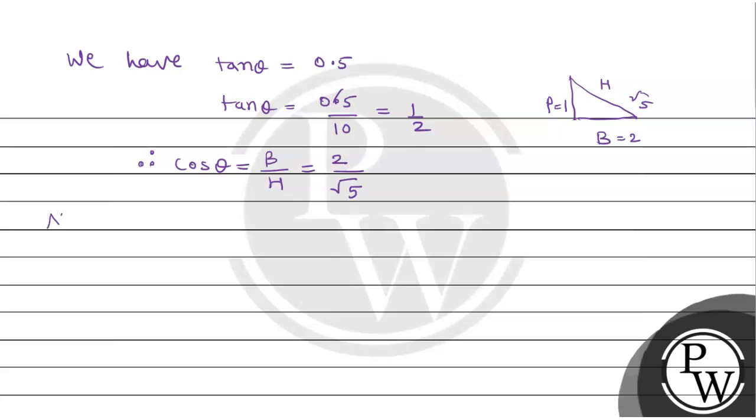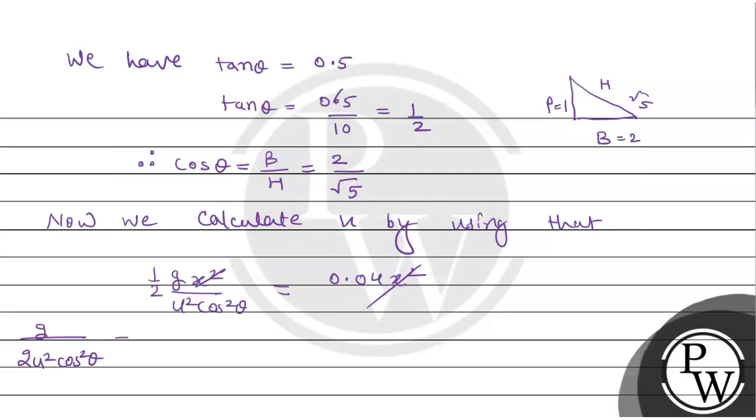Now we calculate u by using that comparison. Comparing the coefficient, you have one by two g x square upon u square cos square theta equals 0.04 x square.